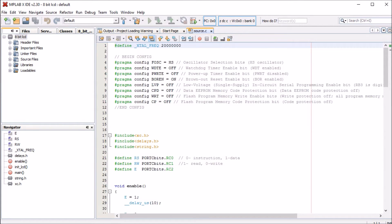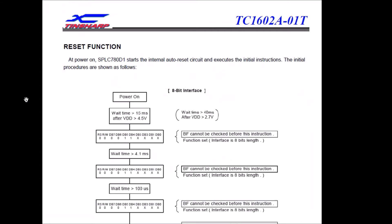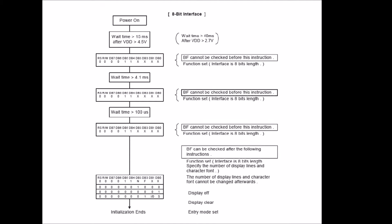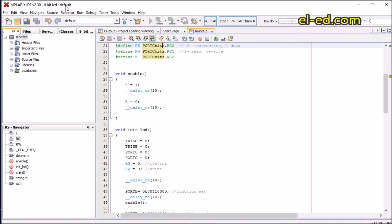Our program is based on this flowchart, which we get from the datasheet. The flowchart shows the power-on sequence — it asks you to wait for 40 milliseconds. These timing values will be different for different manufacturers, so to be on the safe side you can use a slightly larger value than what is shown. Based on this flowchart we will start our coding, and we have defined two sub-functions.